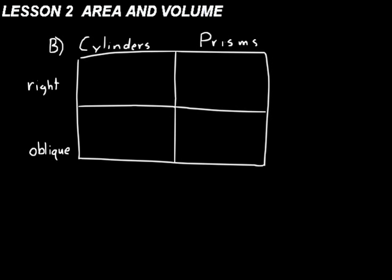Cylinders have closed curves for bases — like a circle, which is usually what we think of. But it doesn't have to be a circle. In drafting, if we were drawing a can for manufacturing to show all its parts, we'd put a dashed line here to show the hidden edge.